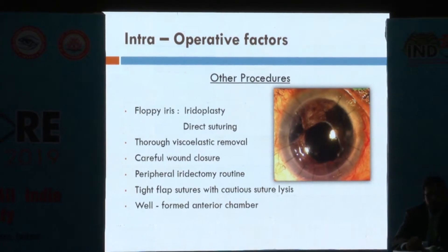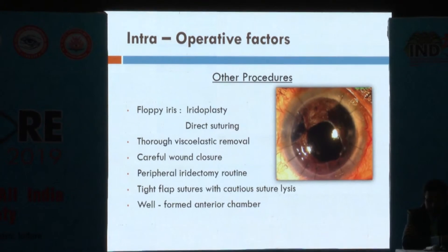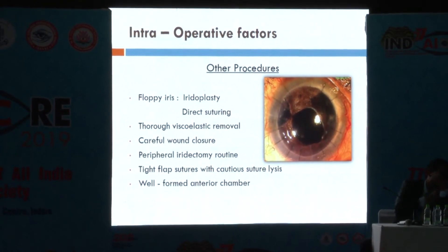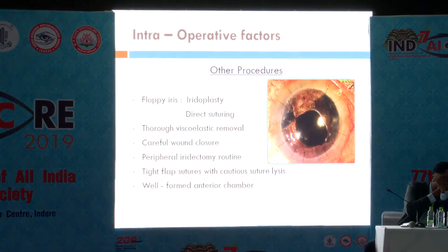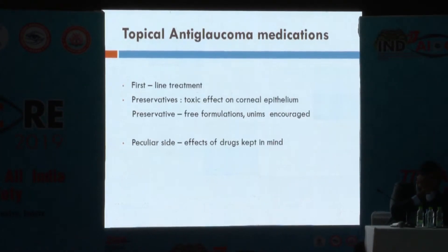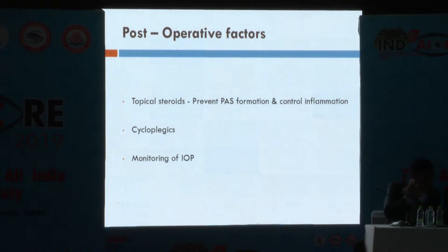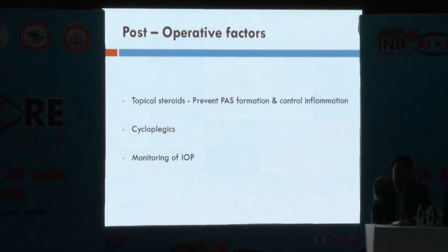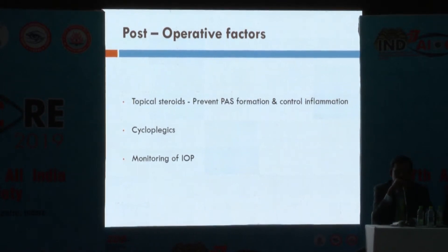Floppy iris can be managed by direct suturing or iridoplasty to prevent future PAS formation. Thorough viscoelastic removal and careful wound closure are important. Peripheral iridectomy is a routine procedure that has to be done, along with tight flap sutures and a well-formed anterior chamber. Postoperatively, we have to prevent inflammation and PAS formation by judicious use of topical steroids. Cycloplegics should be started to keep the pupil mobile and prevent pupillary block glaucoma. Monitoring of IOP is important to prevent steroid-induced secondary glaucoma.